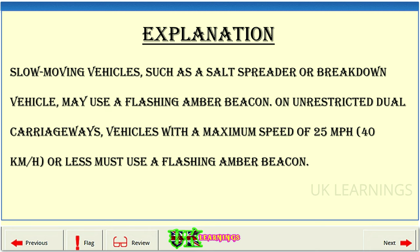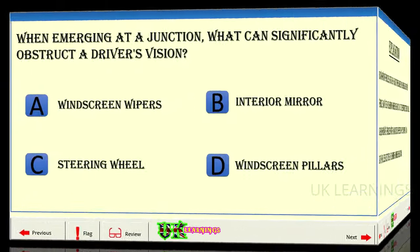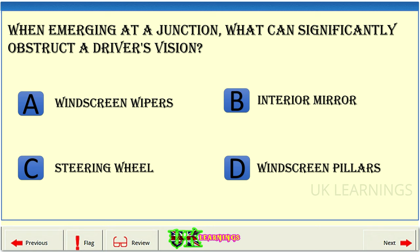Explanation: Slow moving vehicles such as a salt spreader or breakdown vehicle may use a flashing amber beacon on unrestricted dual carriageways. Vehicles with a maximum speed of 25 miles per hour (40 kilometres per hour) or less must use a flashing amber beacon.